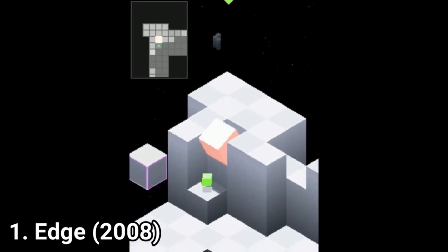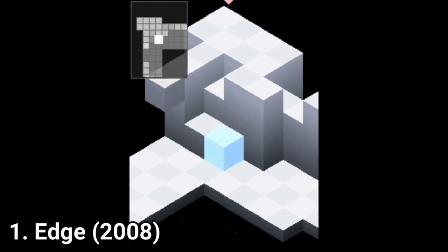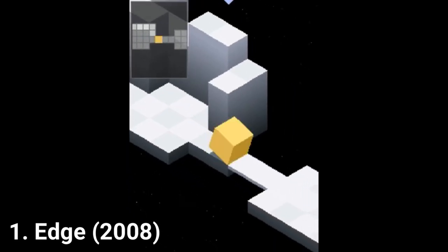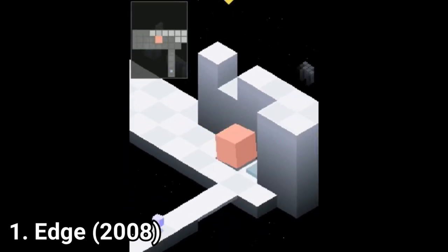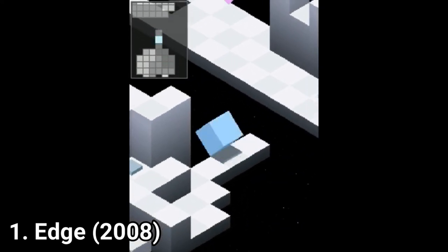You get obstacles like switches, platforms that fall down if you stay too long on them, blocks that can push you out of a level or work as transportation platforms or ledges.